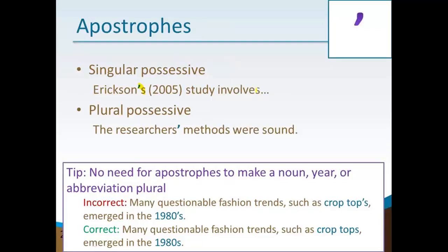The researchers' methods were sound. If I'm talking about more than one researcher, then this word needs to be both plural — it needs to include an S — and it needs to be possessive, so the apostrophe actually goes after the S instead of before. If I were to put an apostrophe before the S, I would just be talking about one single researcher.